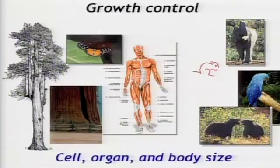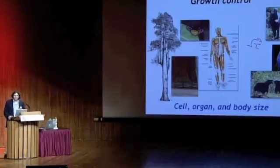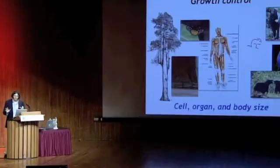Despite the obvious size variation as a feature of biological systems, we actually know relatively little about what controls the sizes of cells, much less about what controls the size of organs and body size. The TOR pathway, along with the HIPPO pathway, are turning out to be the main regulators of growth in all eukaryotes.